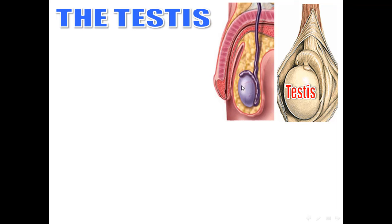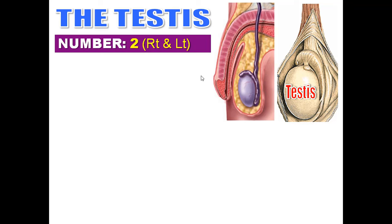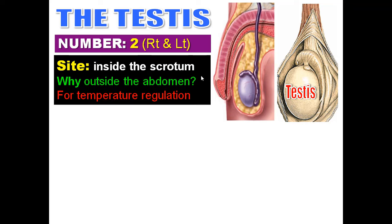Regarding the testis — men have two, one right and one left. The testis is located in a sac called the scrotum, outside the abdomen, for temperature regulation, because spermatogenesis takes place at a temperature of 33 to 34 degrees.